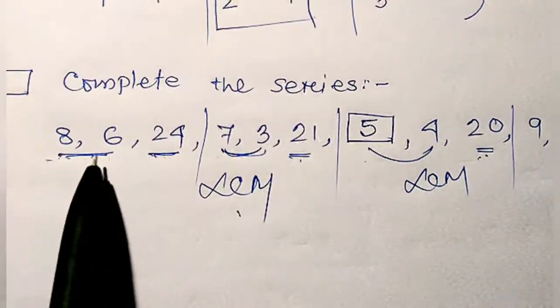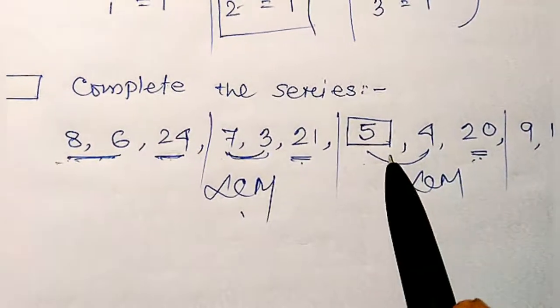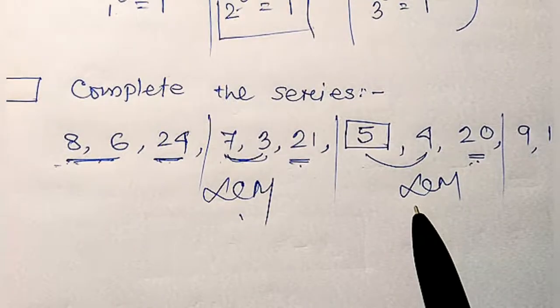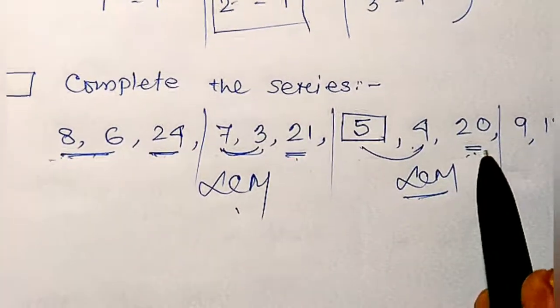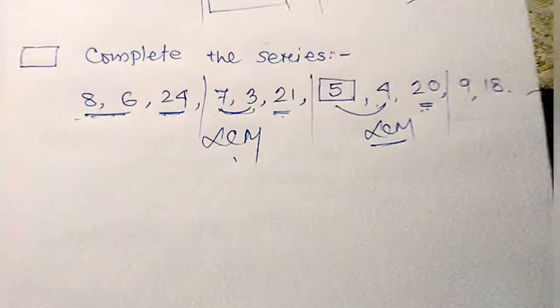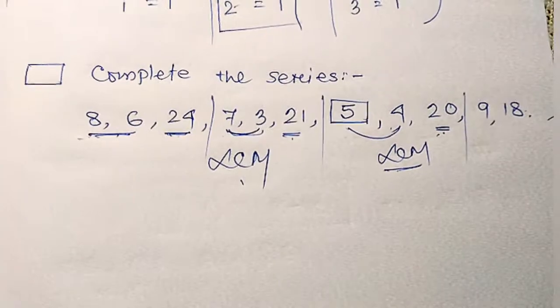So it is clear the answer should be 5, because if we take the LCM of 5 and 4, then you can get 20. Hope you understood this, and thank you for watching.